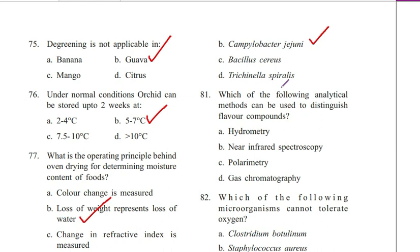Question 81. Each of the following analytical methods can be used to distinguish flavor compounds: A. Hydrometry, B. Near infrared spectroscopy, C. Polarimetry, D. Gas chromatography. Answer is D. Gas chromatography.